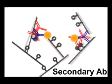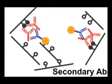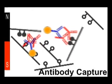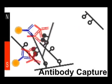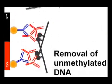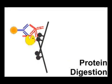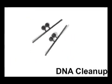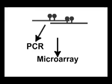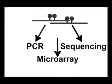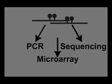Secondary antibodies conjugated to magnetic Dynabeads are used to isolate fragments of DNA which have been bound by the primary antibody. Unmethylated fragments are removed and the antibodies are digested by proteinase K. Phenol-chloroform cleanup removes the digested protein and precipitation purifies the DNA, which is now enriched for methylated fragments.